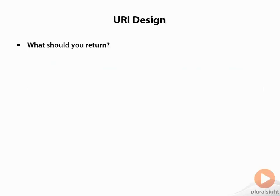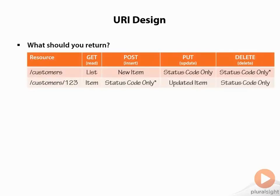But what should you return from those verbs as you encounter them? We're going to look at those same verbs and figure out what we have to return back to the client so the client knows what to do with them. In the case of GET, it should be pretty obvious — the customers endpoint returns a list of those customers, and a GET to the item endpoint returns just the individual item.